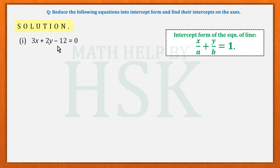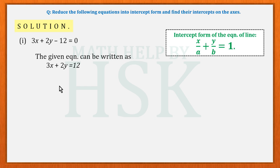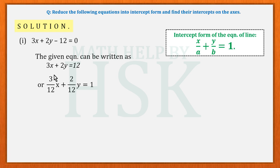To convert the first equation into intercept form, we first write the constant term on the right-hand side and the variable terms on the left-hand side. Then we cross-multiply 12 to the left-hand side, because we need the right-hand side to equal 1. This gives us 3/12 · x + 2/12 · y = 1.